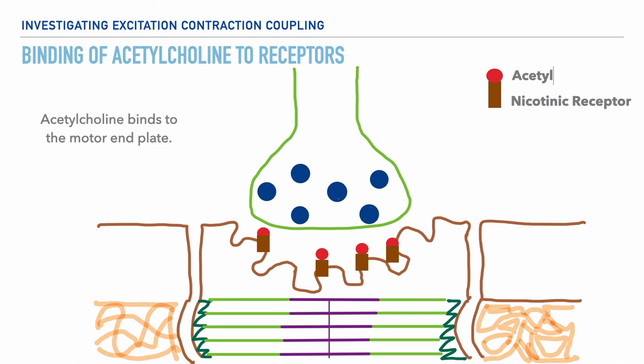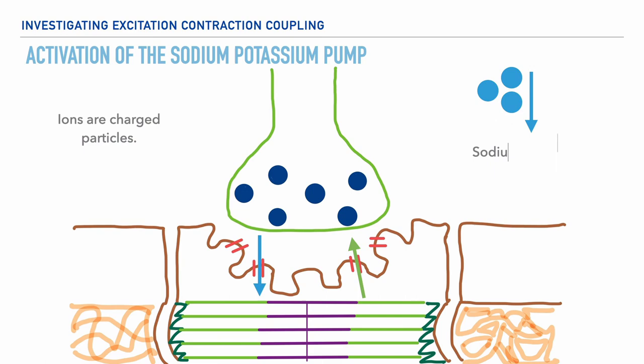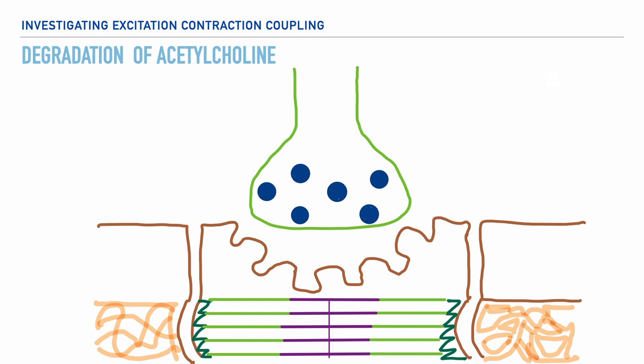Now that acetylcholine has attached to its receptors, we're going to have some ion movement. Keep in mind that ions are simply charged particles. For our purposes, we're specifically looking at two, which are sodium and potassium. We can refer to this briefly as activation of the sodium-potassium pump, where sodium begins to enter the muscle fiber and potassium leaves the muscle fiber, in such a way where more sodium is entering than potassium is leaving — generally occurring in a ratio of three to two.